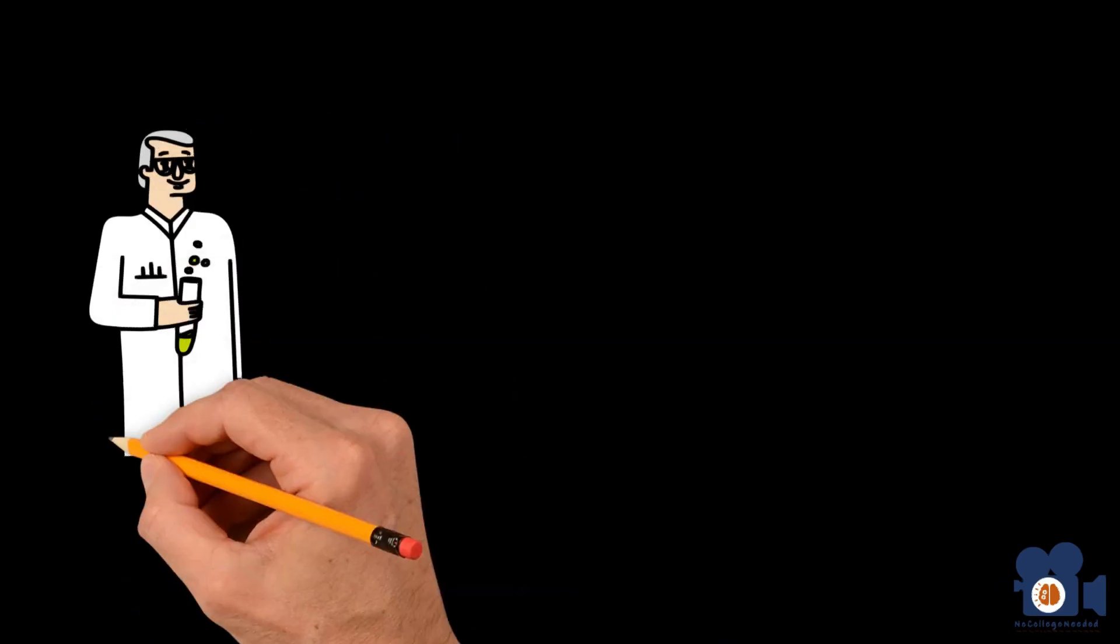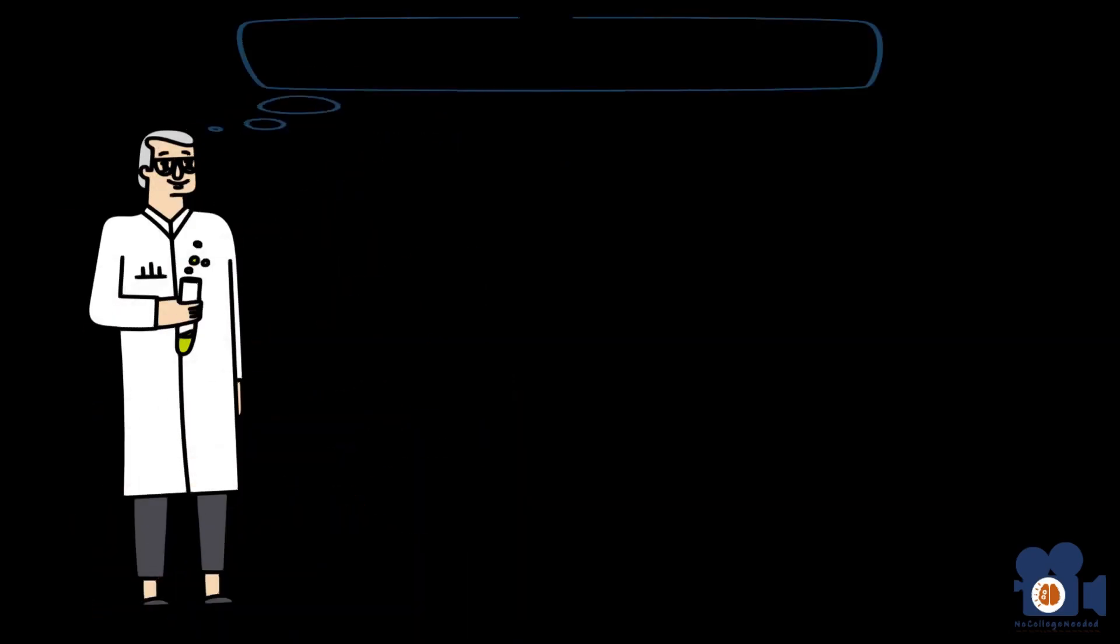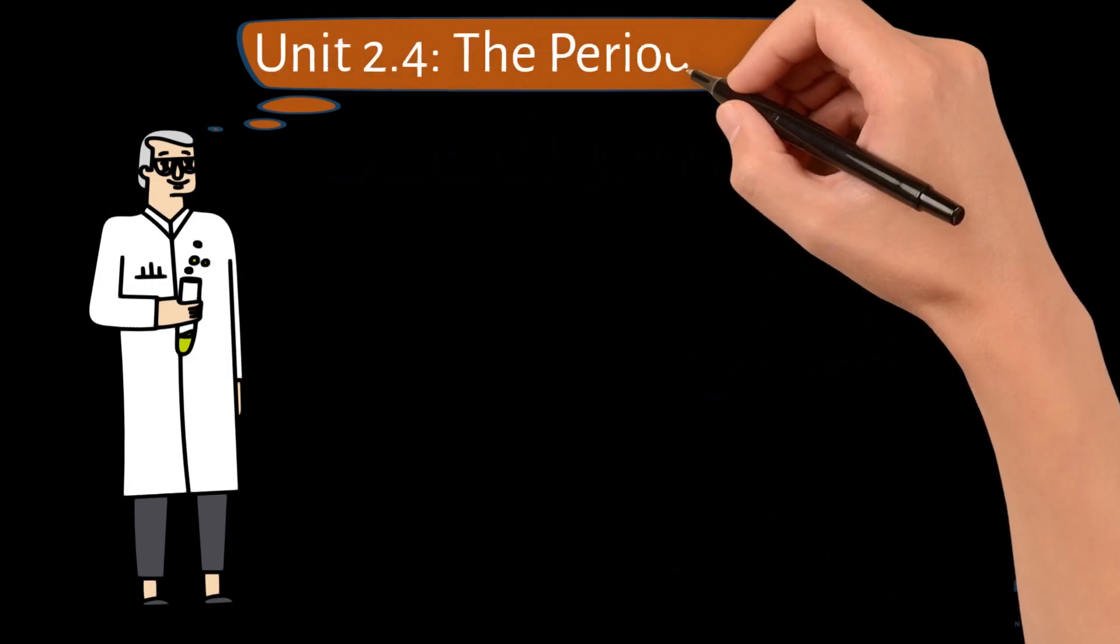Today we're delving into Unit 2.4 of the first half of General Chemistry, which gives a short introduction to the Periodic Table.